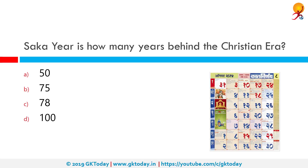Saka year is how many years behind the Christian era? The correct answer is 78. Kanishka, who was a Kushana emperor, is credited with the initiation of the Saka era on his accession to the throne in 78 AD.